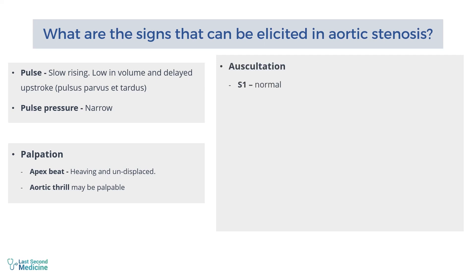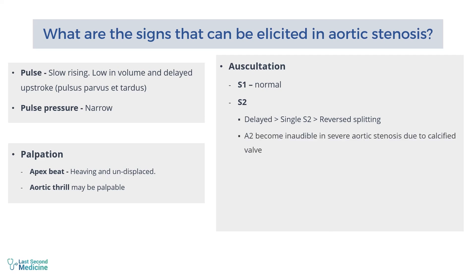On auscultation, S1 is usually normal. As stenosis worsens, A2 is increasingly delayed, giving first a single S2 and then reversed splitting. In severe aortic stenosis, A2 may become inaudible due to a calcified valve. Rarely, there may be an ejection click, indicating a pliable valve. There may be an S4 due to left ventricular hypertrophy.